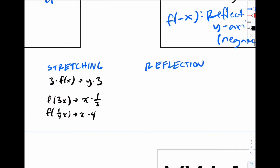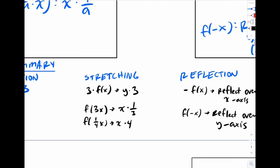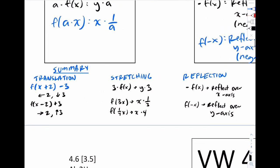And then for reflection, if it's negative f(x), again, that's going to reflect over the x-axis. And f(negative x), that's going to reflect over the y-axis. This is a quick summary with a couple of examples. So good luck on your homework.